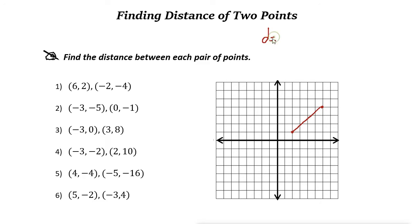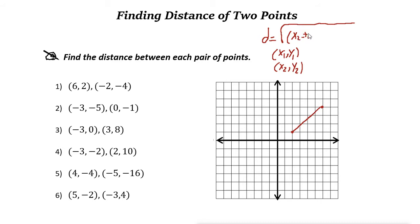d equals to — so for these two points, let's say we have two points: x1, y1 and x2, y2. If you have these two points, then the formula is: d equals the square root of (x2 minus x1) inside the parentheses squared, plus (y2 minus y1) squared.